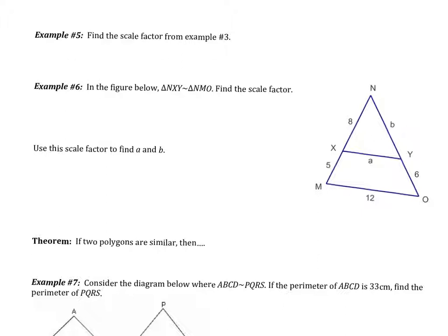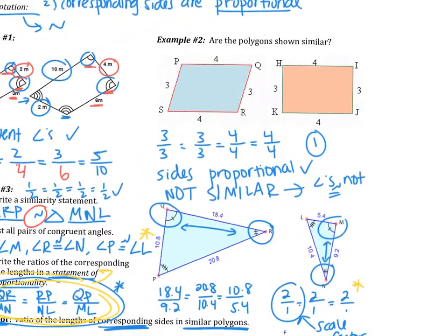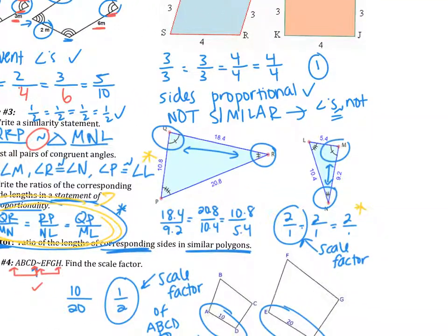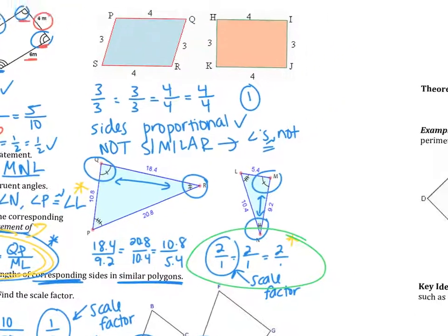In example 5, we find the scale factor from example 3. We already know that 18.4 corresponds to 9.2, which simplifies to 2 over 1. That is the scale factor. It shouldn't matter which pair of corresponding sides you choose — any two corresponding sides will give the same scale factor. We saw that in example 3, where all ratios simplified to 2 to 1 every time.